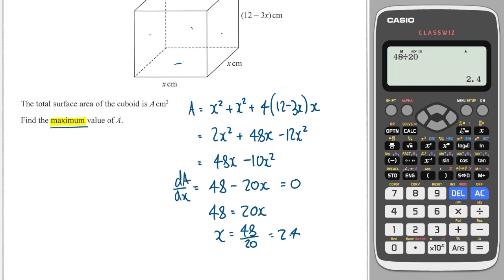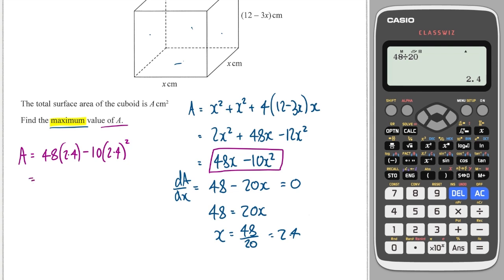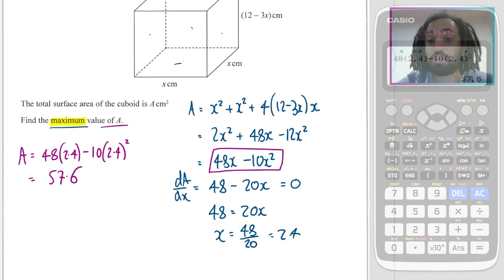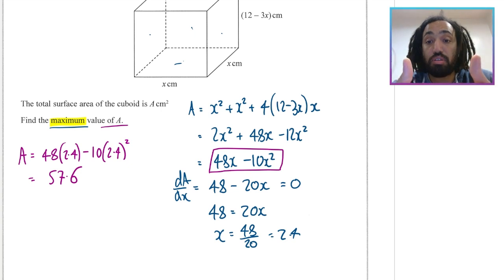Many people stop at x equals 2.4, but the question asks for the maximum value of A. So we substitute back into the formula: A equals 48 times 2.4 minus 10 times 2.4 squared, giving an answer of 57.6. That's differentiation done — please like the video if you found it useful. It's a really important topic for A-level maths, so it's a good one to master at GCSE level.